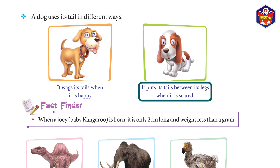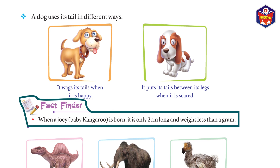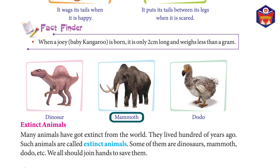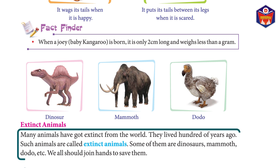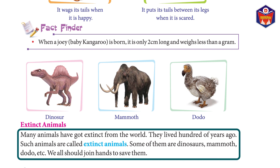A dog uses its tail in different ways: it wags its tail when it is happy, and puts its tail between its legs when it is scared. Fact finder: when a baby kangaroo is born, it is only two centimeters long and weighs less than a gram. Extinct animals: dinosaur, mammoth, and dodo. Many animals have gone extinct from the world; they lived hundreds of years ago and are called extinct animals.